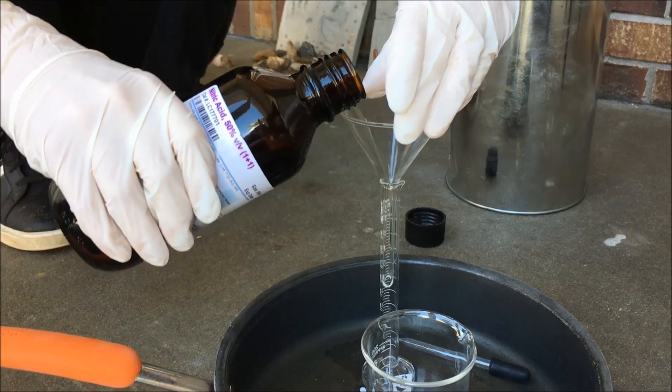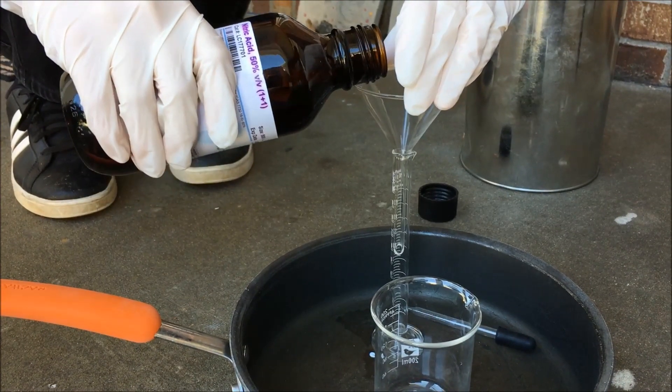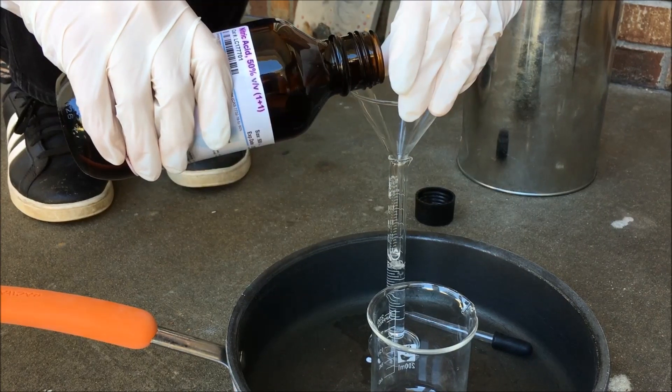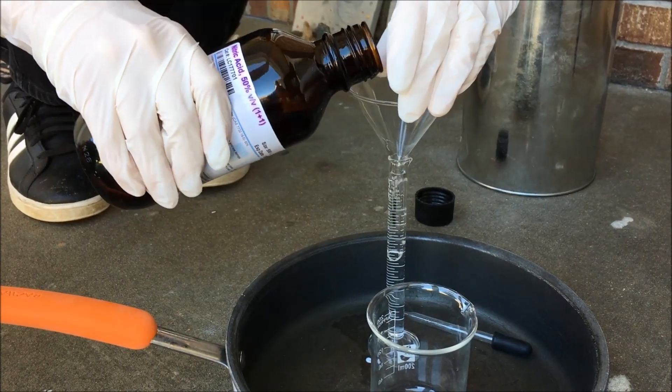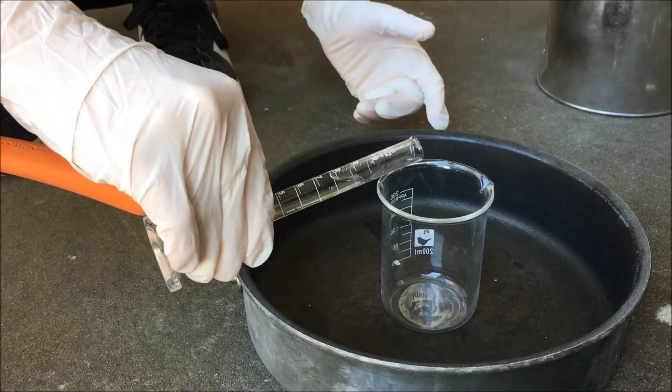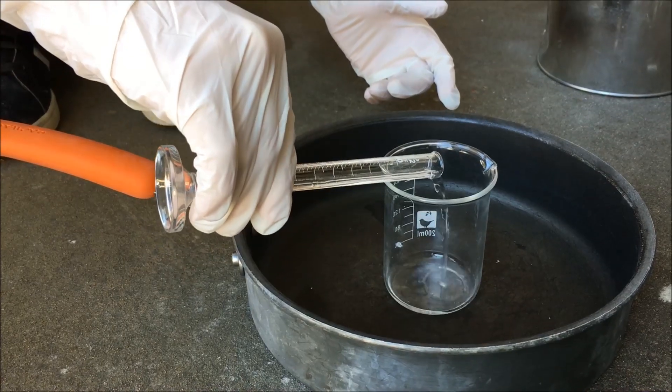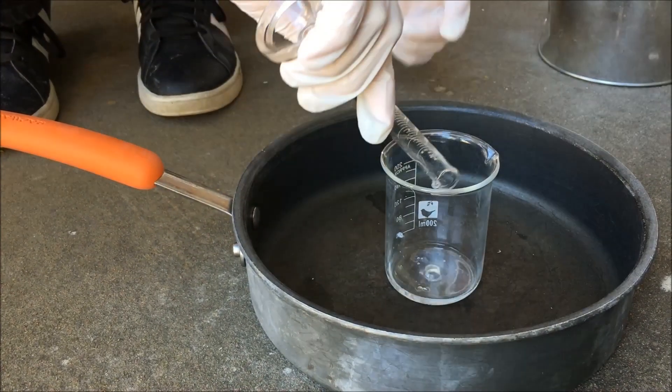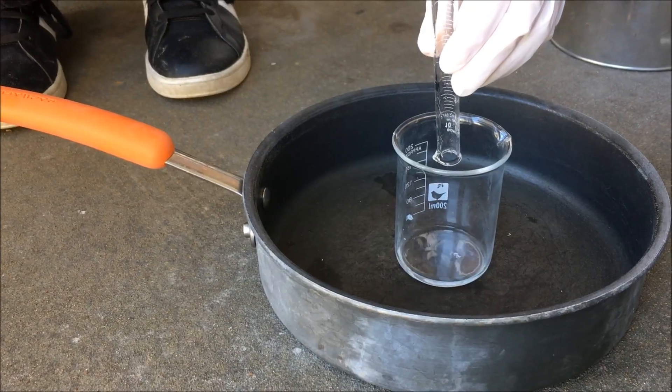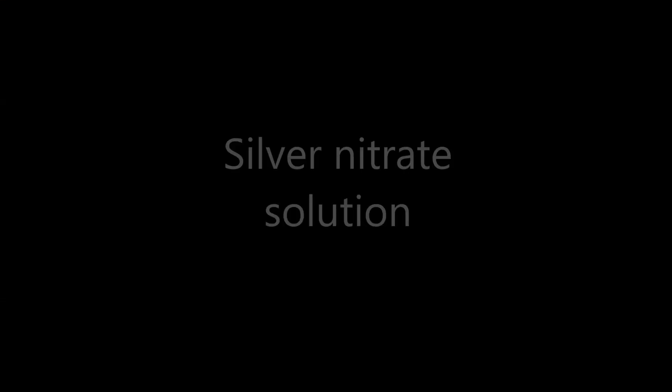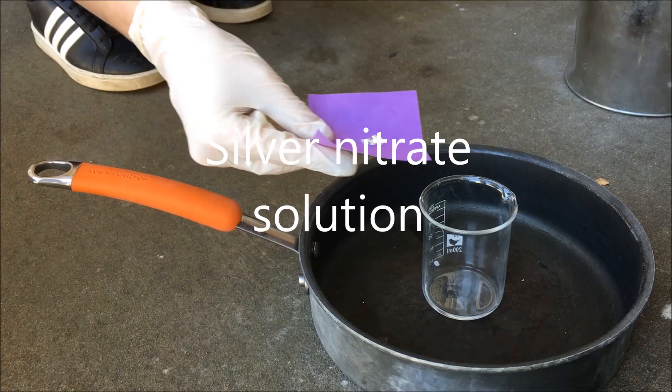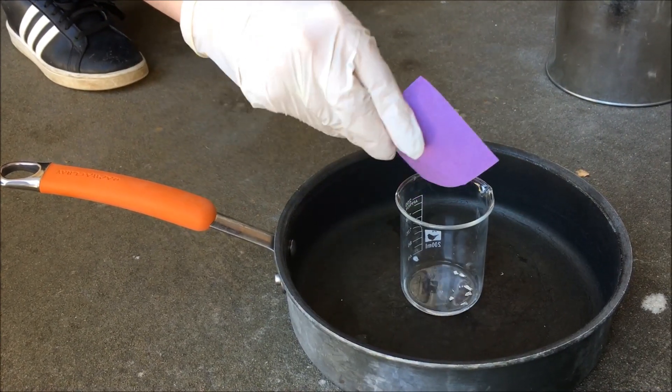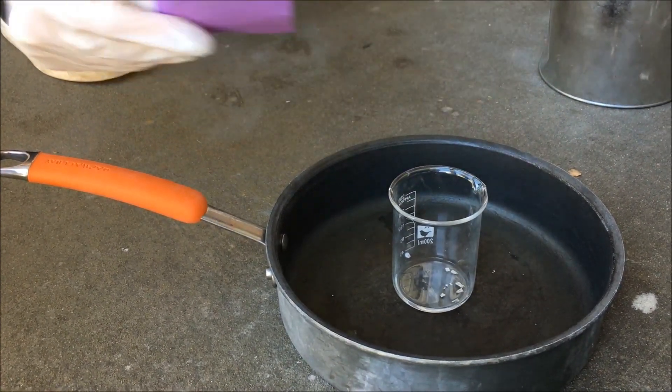To start, pour 8.5 milliliters of 50% nitric acid into a beaker. Then add 1 gram of pure silver into the nitric acid and let it dissolve. You can add a hot water bath for it to dissolve quicker.